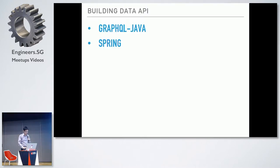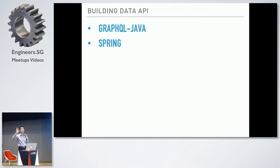To build this data API for the demo today, we are going to use two libraries. The first one is GraphQL Java and the second one is Spring. We are using Spring mostly for booting the application. The logic of building the API itself will be in GraphQL Java. So if you don't know much about Spring, that's okay — we just use it to create the endpoint for the API, and all the logic will be in Java with the GraphQL library.